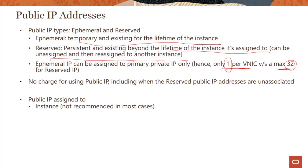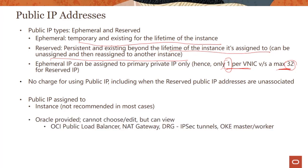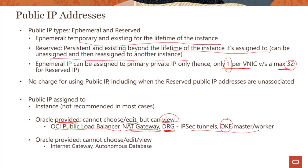When should you use public IPs? In most cases you probably don't need them and it's not recommended to assign public IPs directly to instances. If you're using a public load balancer, Oracle provides a public IP that you can view but not choose or edit. The same applies for NAT gateways and managed Kubernetes — you get a public IP you can view but cannot choose or edit. For internet gateways, you cannot even view the public IP.